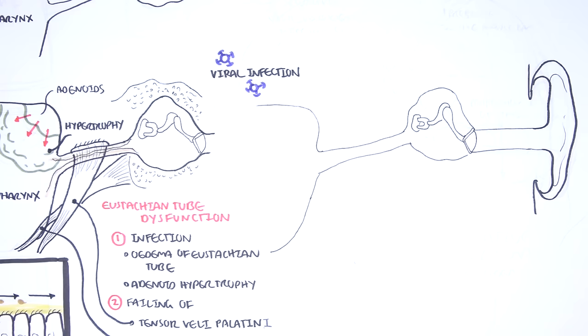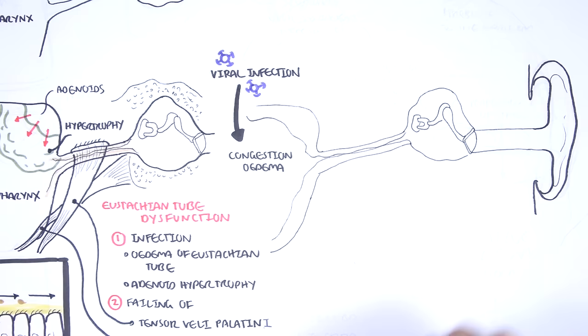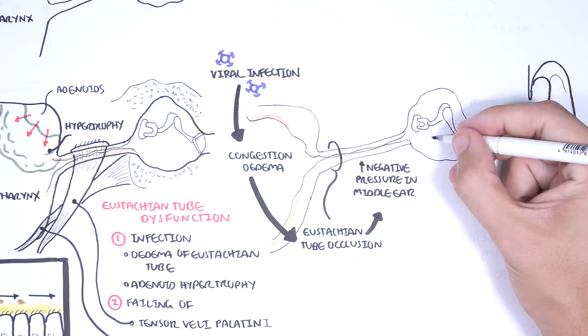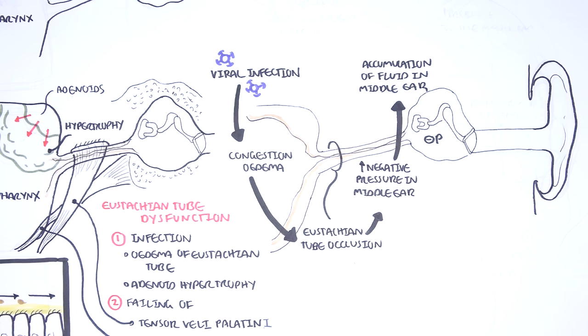So let's begin with a viral upper respiratory tract infection that has happened for a few days. This eventually causes congestion and swelling of the nasal mucosa, the nasopharynx, and swelling of the eustachian tube. Eustachian tube occlusion results in increased negative pressure in the middle ear and accumulation of middle ear secretions.